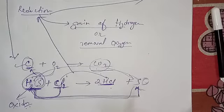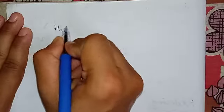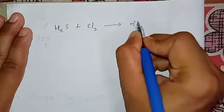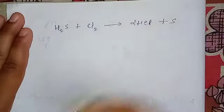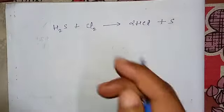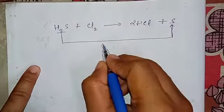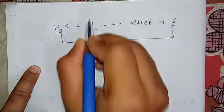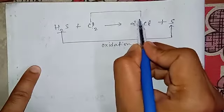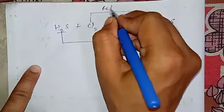Let us now understand reducing agent and oxidizing agent. I am writing the reaction again: H2S + Cl2 → 2HCl + S. H2S is losing hydrogen and becoming sulfur — so this is oxidation. Chlorine is gaining hydrogen and becoming HCl — so this is reduction.